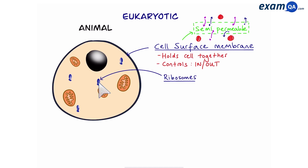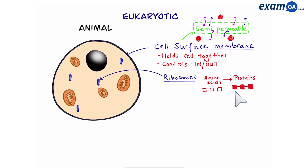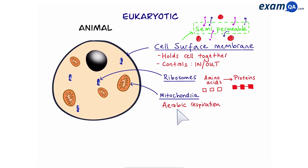We have structures called ribosomes, and they take small molecules called amino acids and join them together to make larger molecules called proteins. This is a mitochondria. An important reaction called aerobic respiration takes place here, and this creates energy for the cell. Energy is also referred to as ATP.